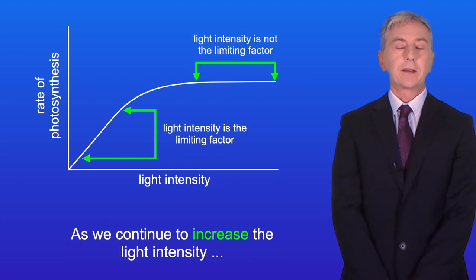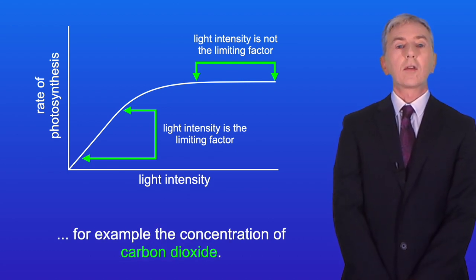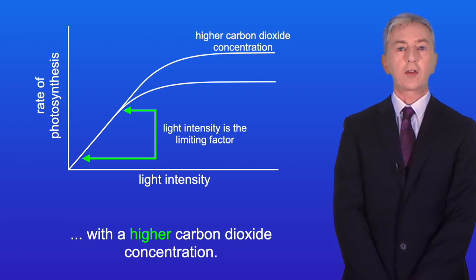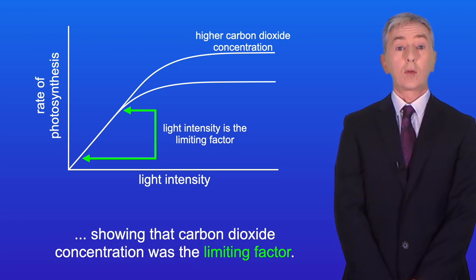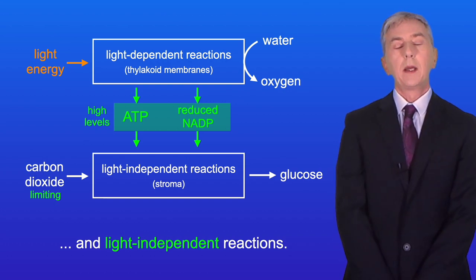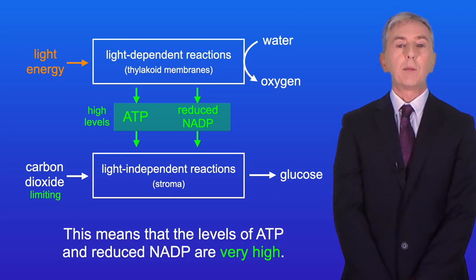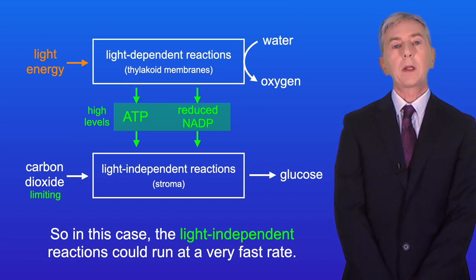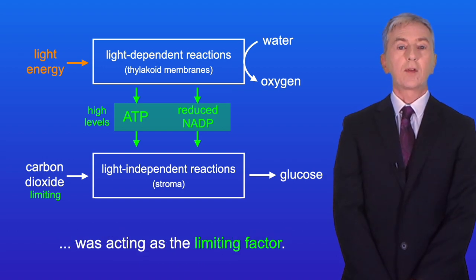As we continue to increase the light intensity, at a certain point the rate of photosynthesis stops increasing — now another factor is the limiting factor, for example the concentration of carbon dioxide. We can see if this is the case by repeating the experiment with a higher carbon dioxide concentration, and we can see that the rate of photosynthesis increased, showing that carbon dioxide concentration was the limiting factor. At very high light intensities, the light-dependent reactions run at a very fast rate, meaning levels of ATP and reduced NADP are very high. However, the light-independent reactions also require carbon dioxide, so its concentration was acting as a limiting factor.